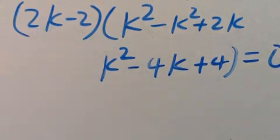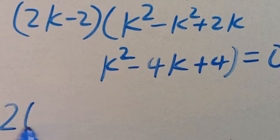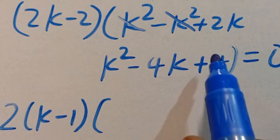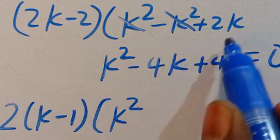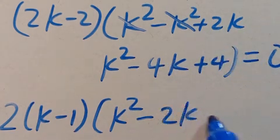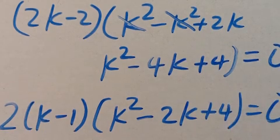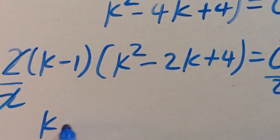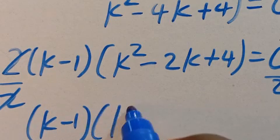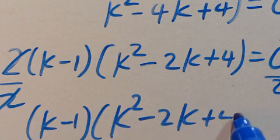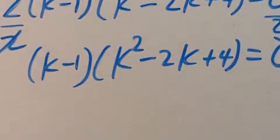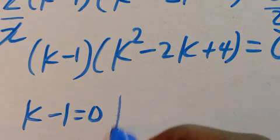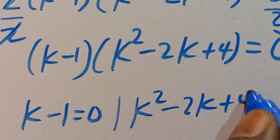From here, 2 is common, so we can factor out 2. Here we will have k minus 1, and combining the remaining terms gives k squared minus 2k plus 4, equals zero. So dividing through, we have k minus 1 in parentheses multiplied by k squared minus 2k plus 4, equals zero. From here k minus 1 equals zero, or k squared minus 2k plus 4 equals zero.